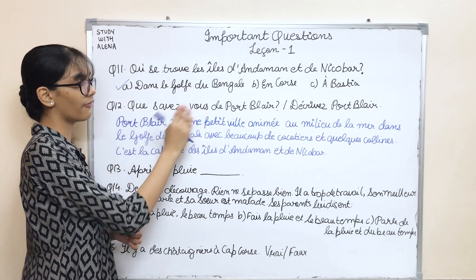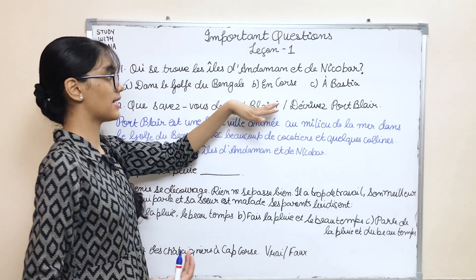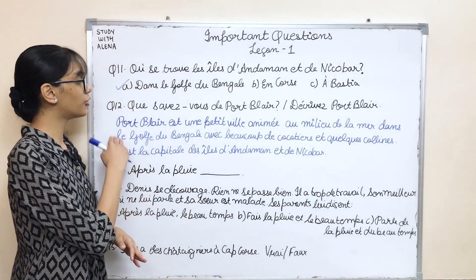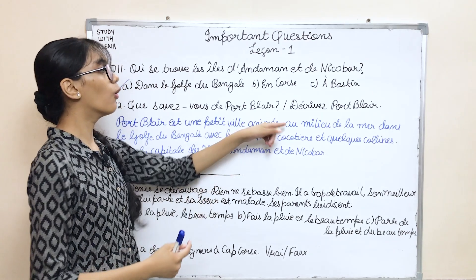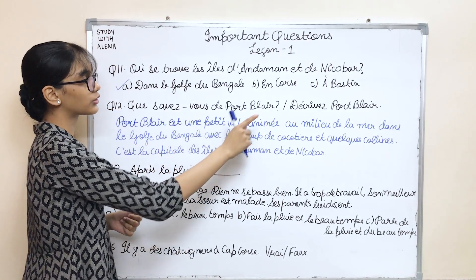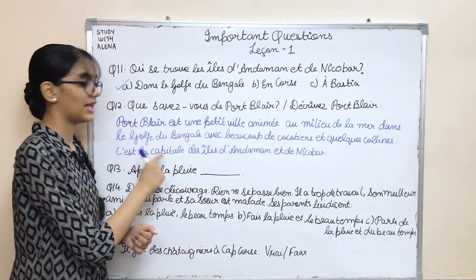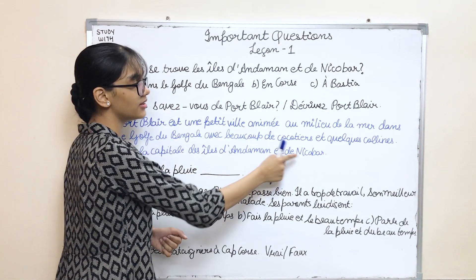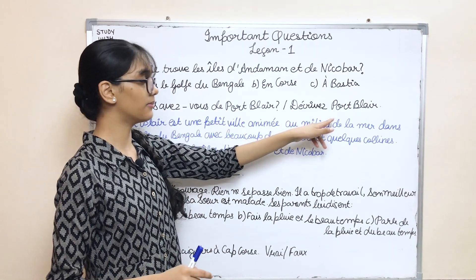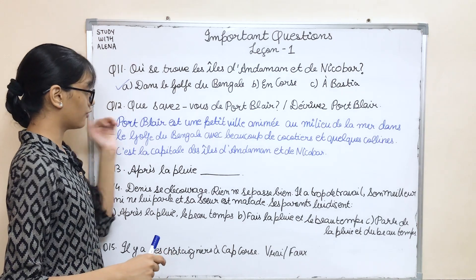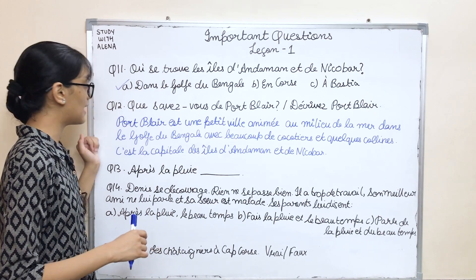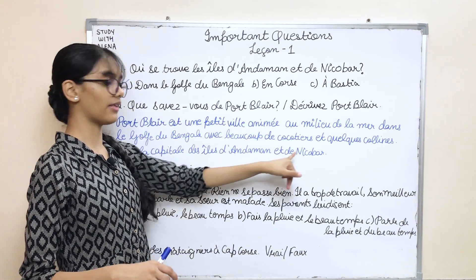The next question is 'Que savez-vous de Port Blair?' or 'Décrivez Port Blair?' The answer is: Port Blair est une petite ville animée au milieu de la mer dans le Golfe du Bengale, avec beaucoup de cocotiers et quelques collines. C'est la capitale des îles d'Andaman et de Nicobar. Port Blair is a small busy city in the middle of the sea in the Gulf of Bengal, with coconut palms and some hills. It is the capital of the Andaman and Nicobar Islands.